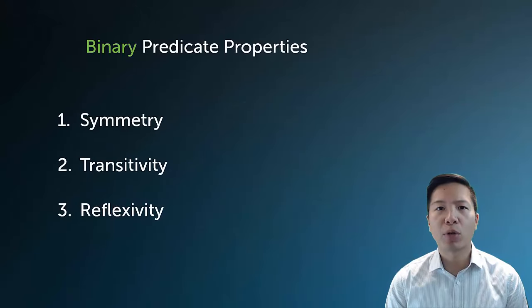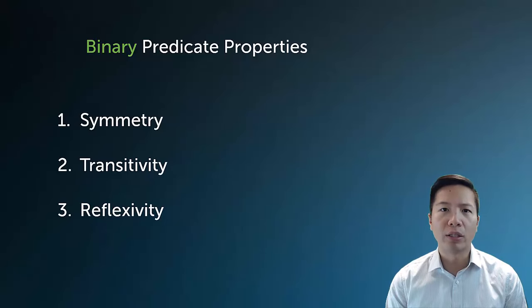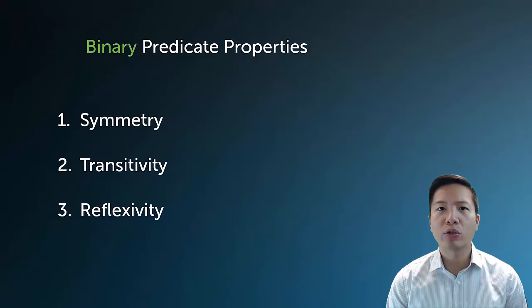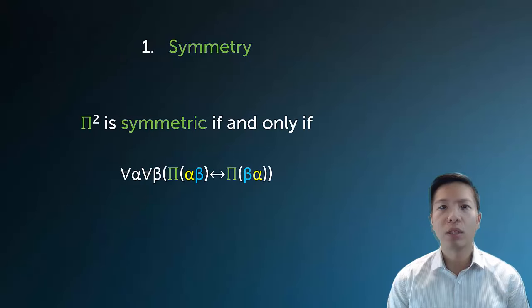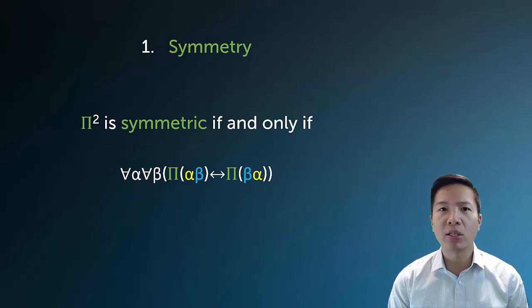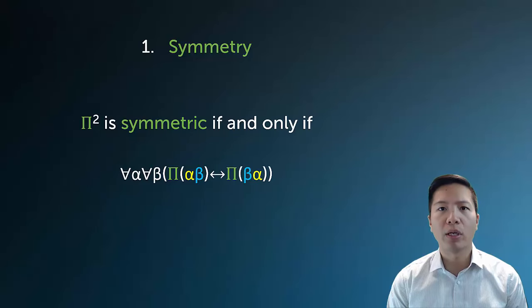The first thing we're going to look at are special properties of binary predicates. Binary predicates are predicates that have two places, and there are three very well-known binary predicate properties: symmetry, transitivity, and reflexivity. These properties can all be written out in logical code, but really the key to understanding them is just to have a good example of something that has the property and a good example of something that doesn't.